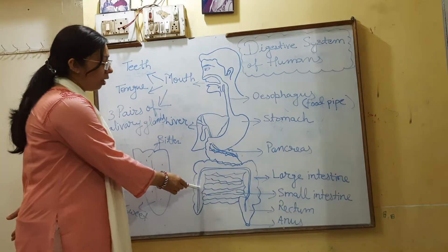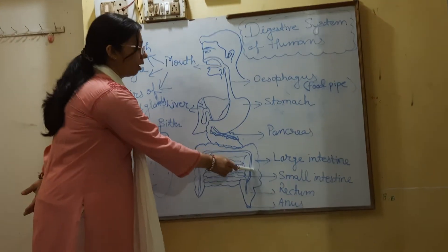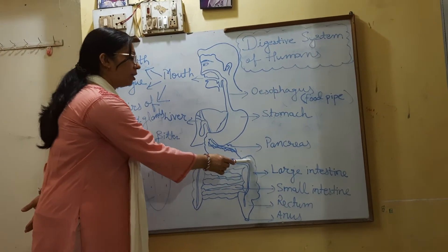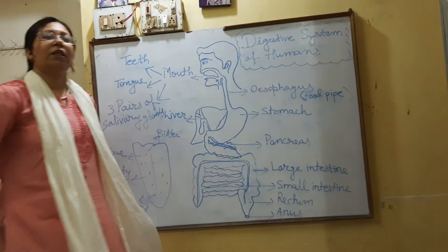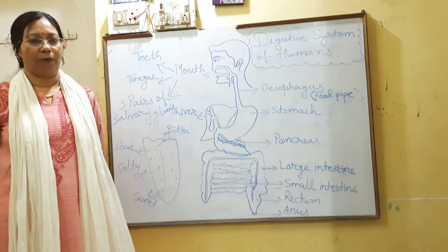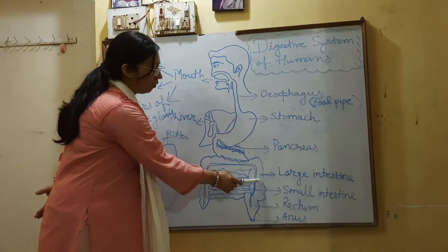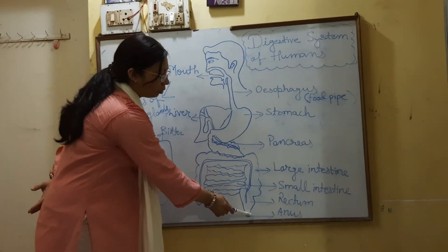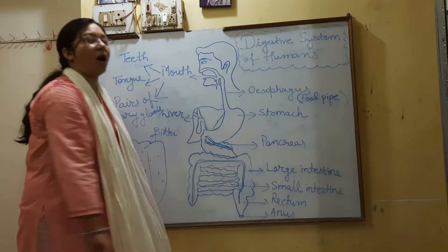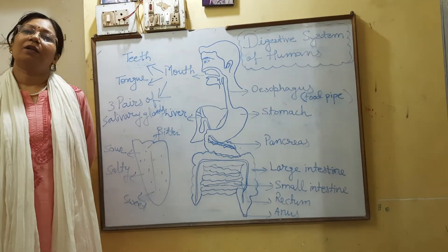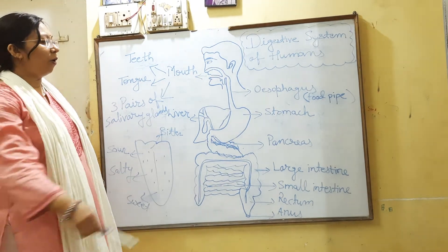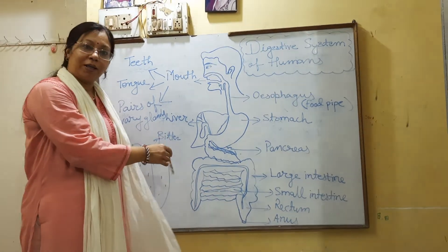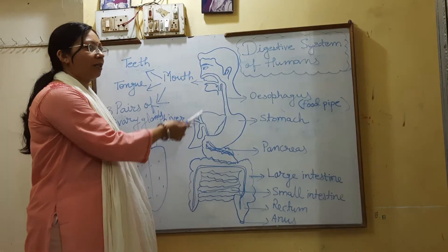Undigested food along with lots of water comes to the large intestine. The wall of the large intestine absorbs the water present in the undigested food. Then the undigested waste gets collected in the rectum and through the anus it comes out from our body. So these are all the functions of the different organs present in the digestive system.